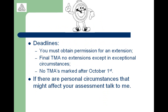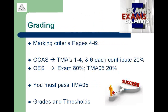If you have any personal circumstances that might affect your assessment, do talk to me in advance. Regarding grading: before submitting TMA01, look at the marking criteria on pages 4 to 6. TMAs 1 to 4 and 6 each contribute 20% of the overall continuous assessment. The exam is 80% and TMA05 is 20% of the overall exam score, and you must pass TMA05 — that's your research project report. You can read more about grades and thresholds in the assessment booklet.